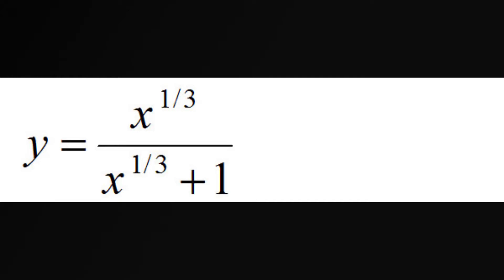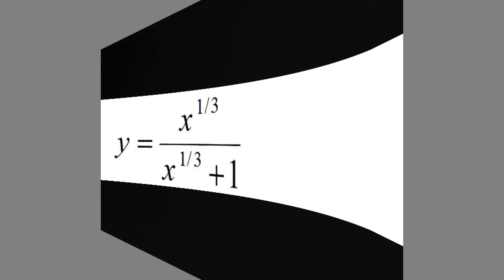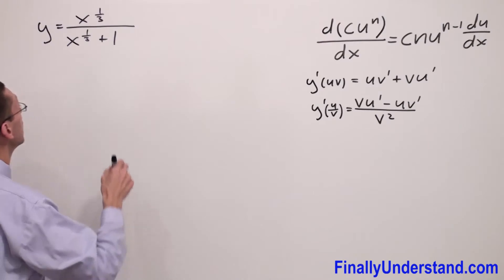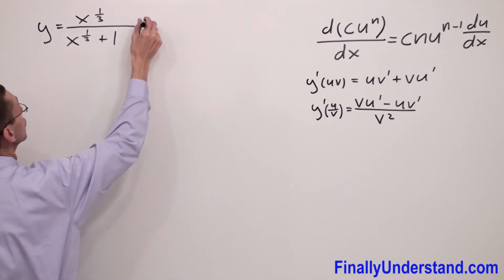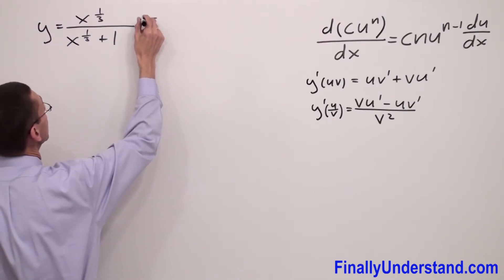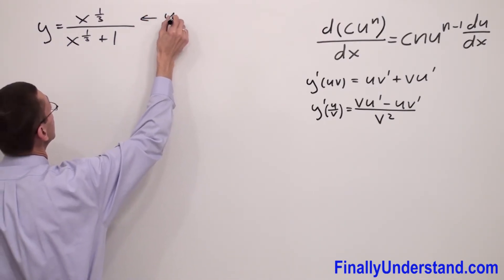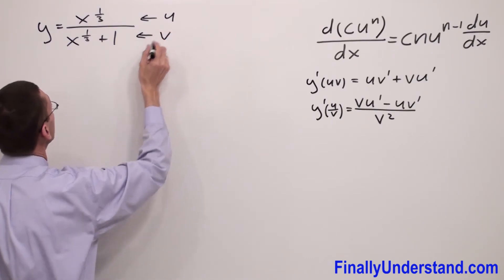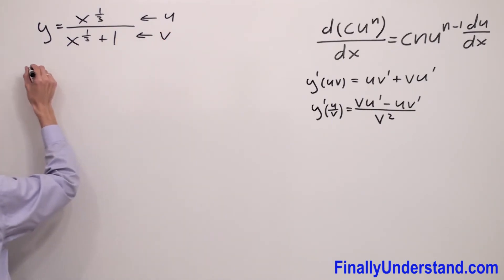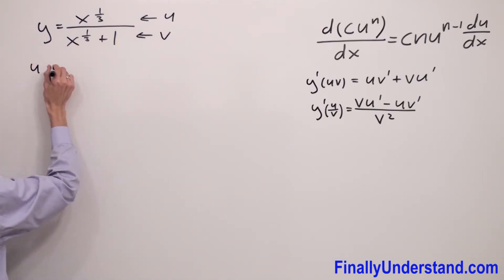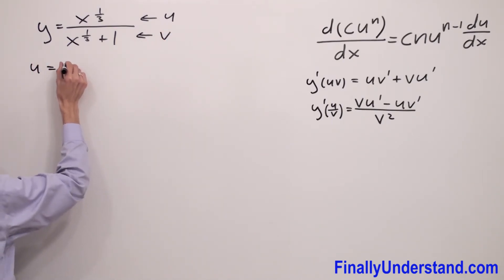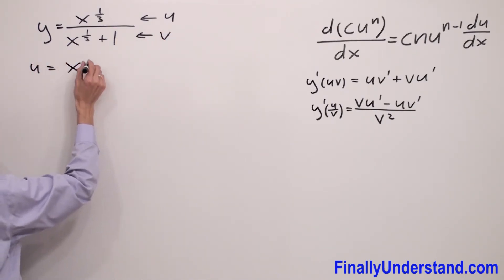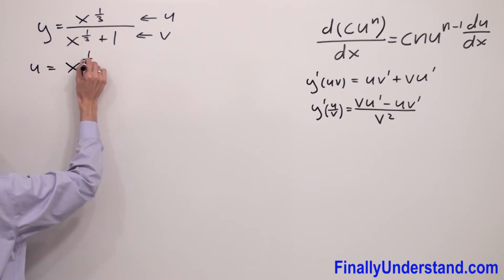Let's take a look at this example. First, find u and v. So, the numerator is my u and the denominator is my v. u is equal to x to the power 1 third.